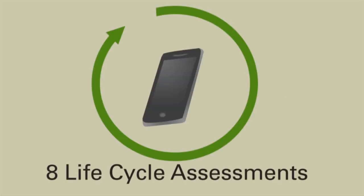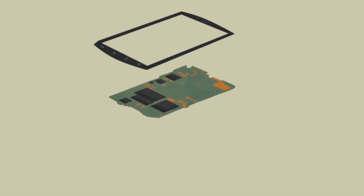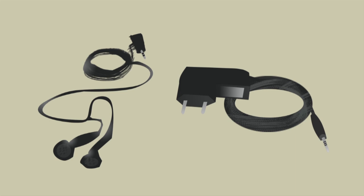Mobile phones have eight life cycle assessments, one for each component. These include the printed circuit board, the display, the battery, the keypad, the microphone, the speaker, the plastic casing, and any accessories.